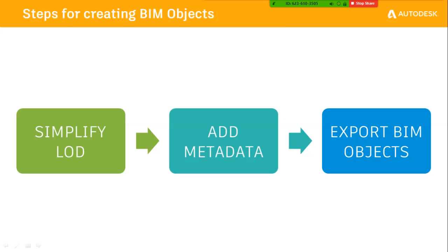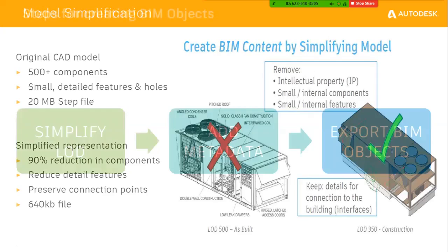Once we provide everything, we can export the BIM object in a recognizable format. In this case, we're importing directly into Revit. One advantage is that Inventor can directly export the model as a Revit file — we don't need to convert to a universal format and then back again. Since Autodesk products are connected, Inventor can directly export its model to Revit and easily communicate with Revit models.